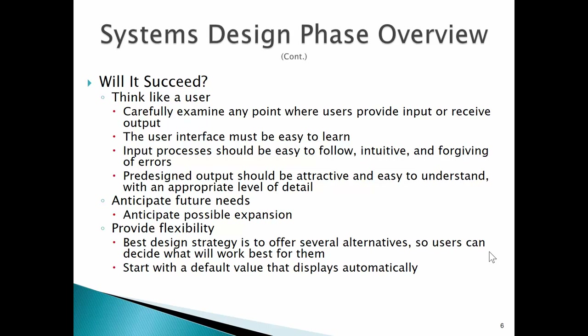Think like a user. You can think of examples where you've interacted with software clearly done by someone thinking like an engineer rather than a user — making it easy for the developer, perhaps, but not for the end user. The system should be easy to learn, easy to follow, intuitive, and forgiving of errors. When we talk about forgiving of errors, we mean giving the user feedback that's easily understood so they can learn the correct process.